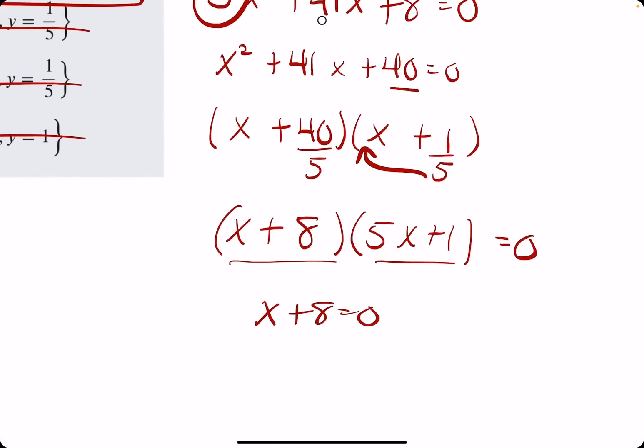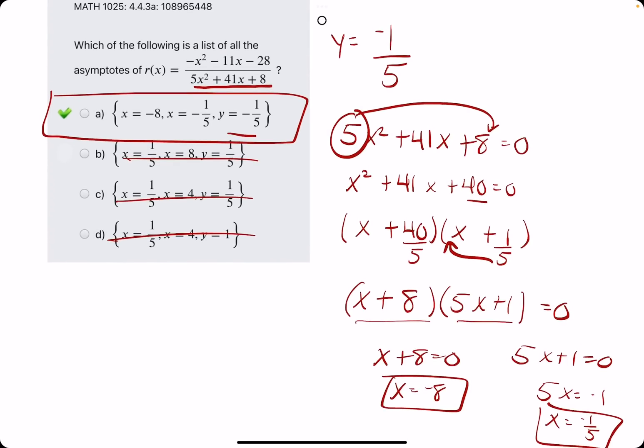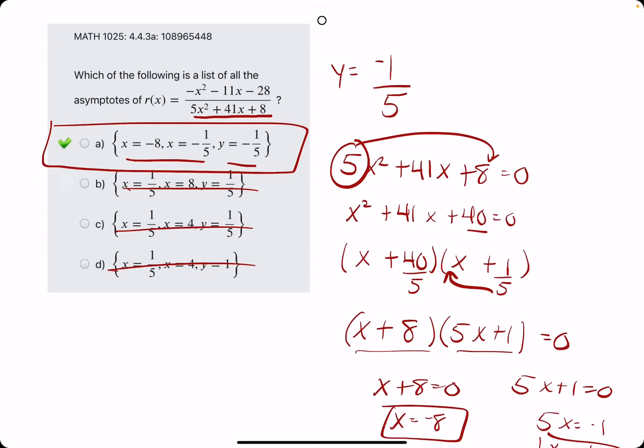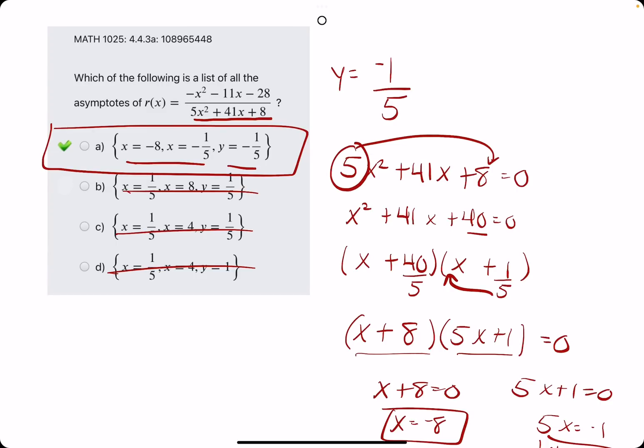So, we set x plus 8 equal to 0. Solve for x to get negative 8. 5x plus 1 equals 0. 5x equals negative 1. So, x equals negative 1 fifth. And then, that's the negative 1 fifth and negative 8 that we see here. So, those are the x values that make the denominator equal to 0. Therefore, the vertical asymptotes.